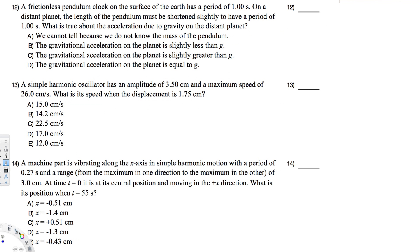The first question asks: a frictionless pendulum clock on the surface of the Earth has a period of one second. On a distant planet, the length of the pendulum must be shortened slightly to have a period of one second. What is true about the acceleration due to gravity on the distant planet?